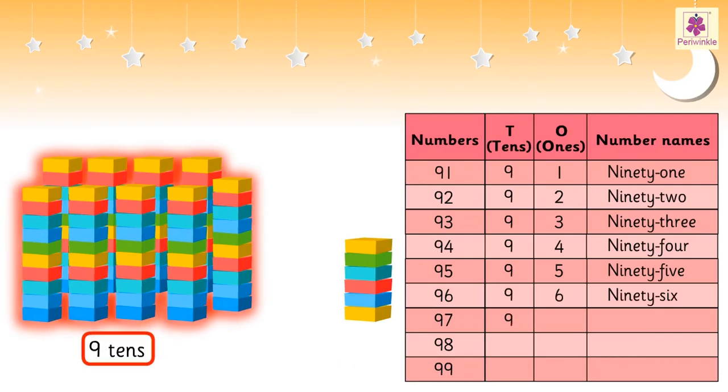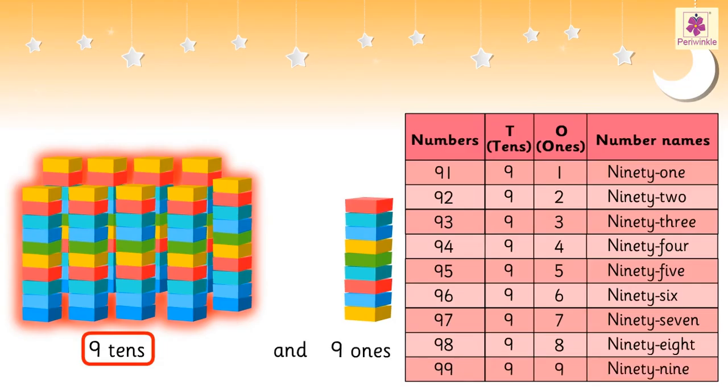9 tens and seven ones is 97. 9 tens and eight ones is 98. 9 tens and nine ones is 99.